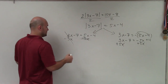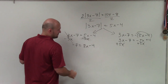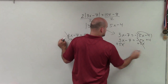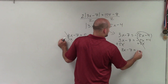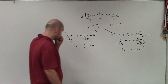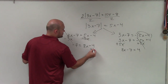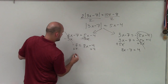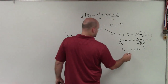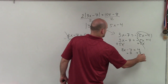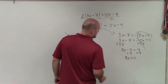Negative 3x minus 3x is 0, so I'm left with negative 7 equals 8x minus 4. Over here, that goes to 0, and I have 8x minus 7 equals positive 4. Now these are two-step equations. I'll add 4 and get negative 3 equals 8x. Over here, I add 7 and get 8x equals 11.